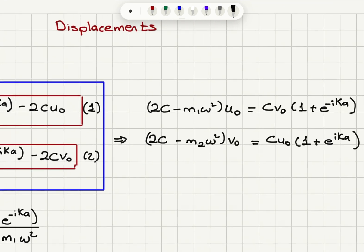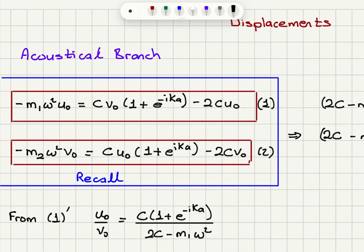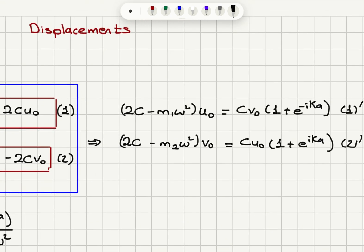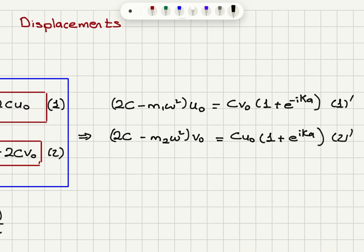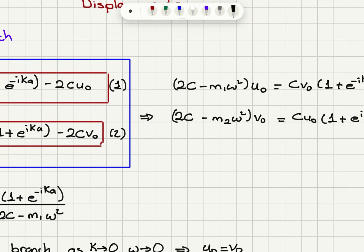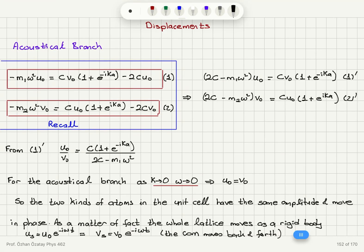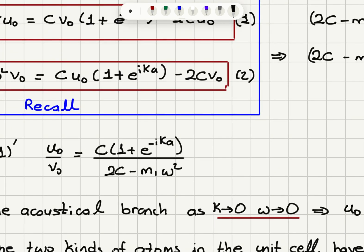From these equations, isolating u0 and v0 by taking minus 2c u0 to the left-hand side, we obtain: 2c minus m1 omega squared times u0 equals c v0 times (1 plus e to the minus ika). Similarly for the second equation: 2c minus m2 omega squared times v0 equals c u0 times (1 plus e to the ika). Dividing, we get u0 over v0 equals c times (1 plus e to the minus ika) divided by (2c minus m1 omega squared).